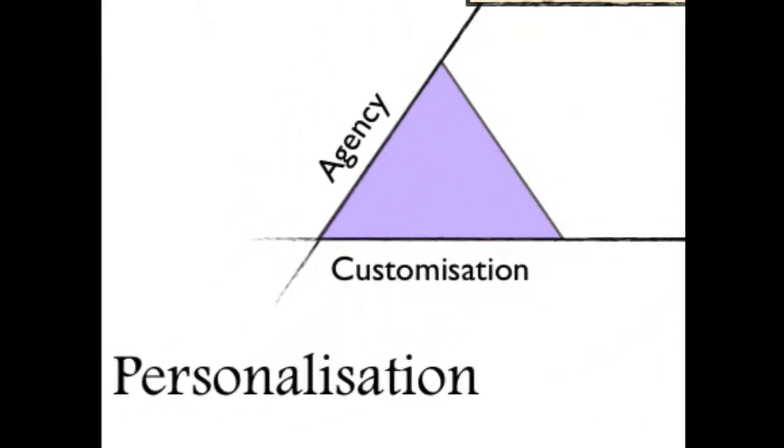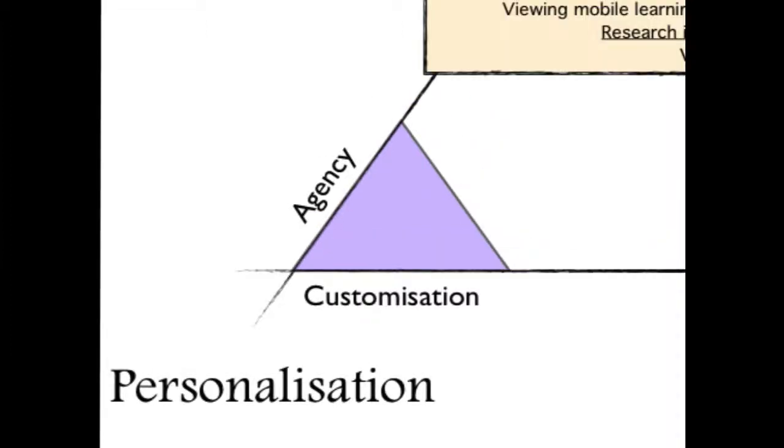Personalisation is a generic term we use in the framework to describe several characteristics or affordances of mobile devices that make learning more individual. Here we can see two of these, which are described as agency and customisation. The use of mobile devices by learners, especially when they are used by the learner extensively as a personal device, significantly increases their independence and autonomy, which we refer to here as agency.